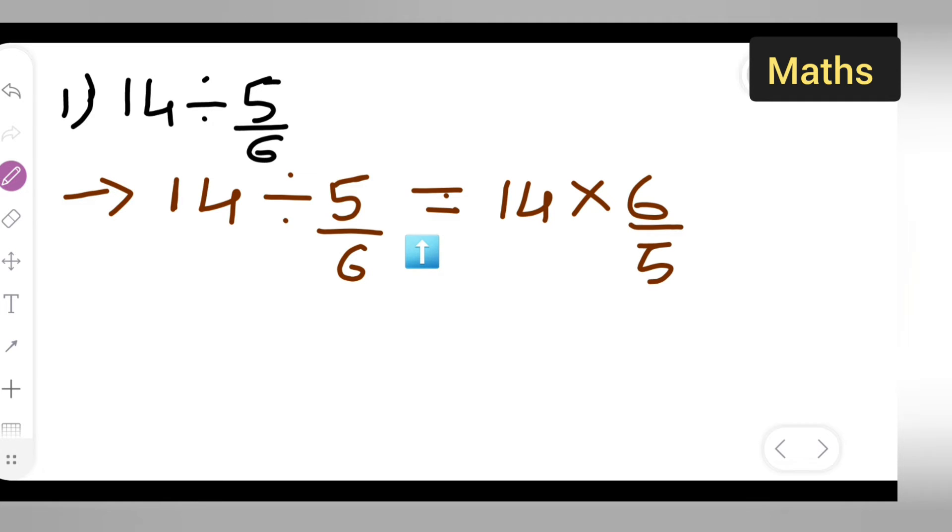Now, anything is getting cancelled? No, right? We are just considering this as 1 because nothing is given. Okay, so now you will multiply 14...